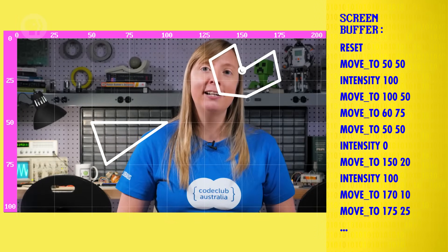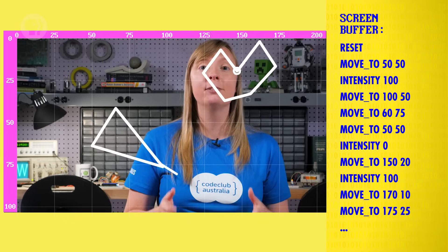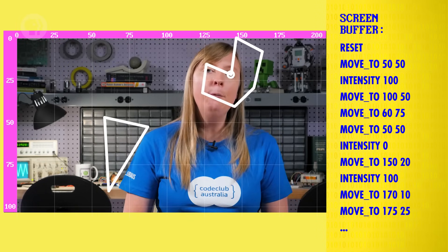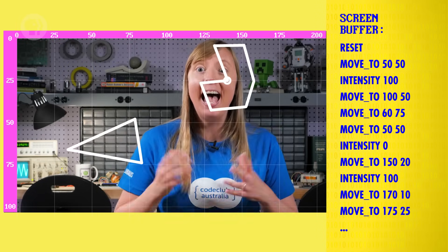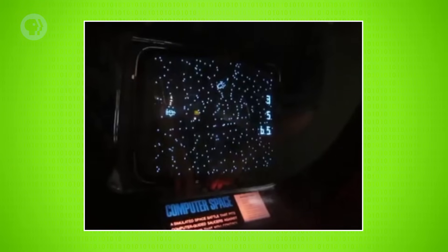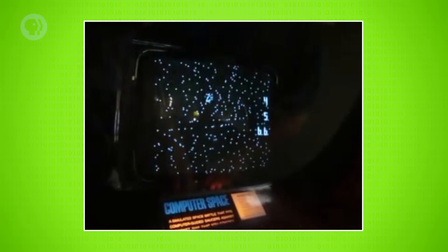Because all these vectors are stored in memory, computer programs can update the values freely, allowing for graphics that change over time — animation. One of the very earliest video games, Spacewar, was built on a PDP-1 in 1962 using vector graphics. It's credited with inspiring many later games, like Asteroids, and even the first commercial arcade video game, Computer Space.